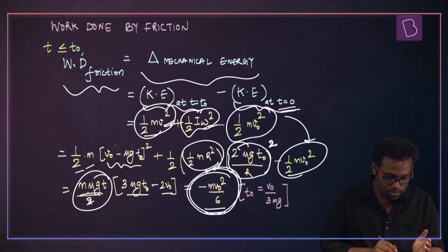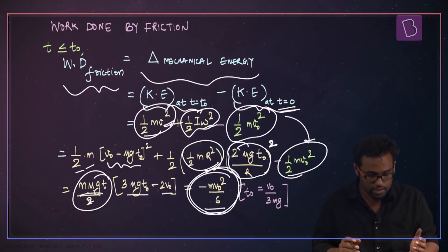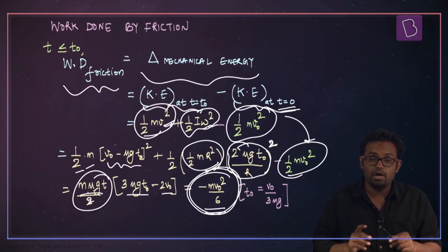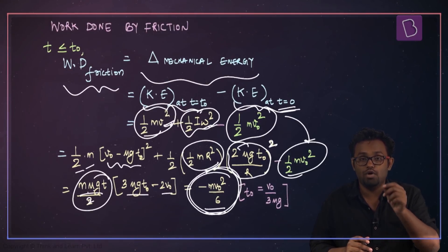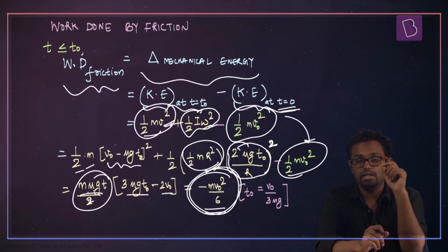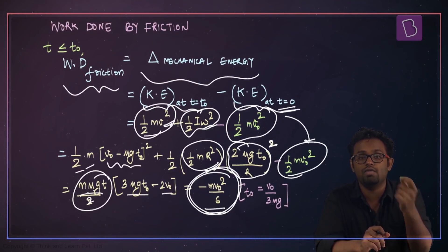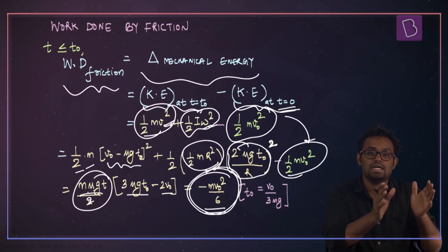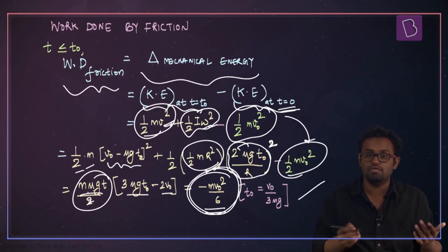To get the expression as a function of time simply use t in place of t₀. After time t₀ pure rolling starts, and when pure rolling occurs there is no relative motion between the bottom-most point and the surface, so no further work is done by friction. The total work done is only up to the sliding phase, which equals minus mv₀²/6.